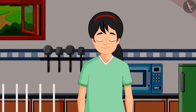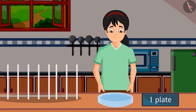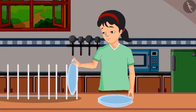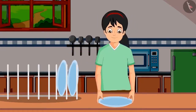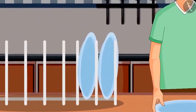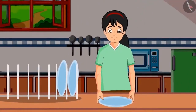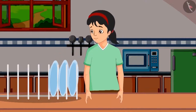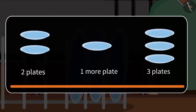Today Pinky's mother is unwell, so Pinky is helping set the plates in the kitchen. She picked up one plate and set it carefully on the shelf, then picked up one more plate and set that too. Friends, how many plates are on the shelf? That's right — one plate and one more plate is two plates. She then set one more plate: two plates and one more plate is three plates.